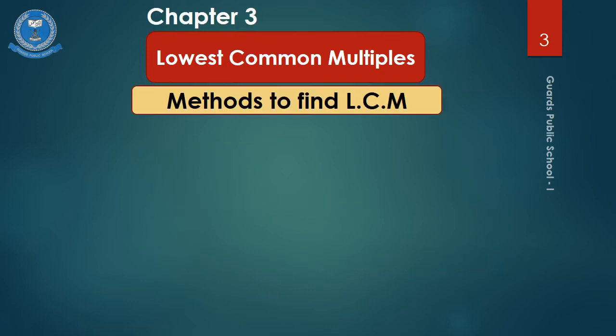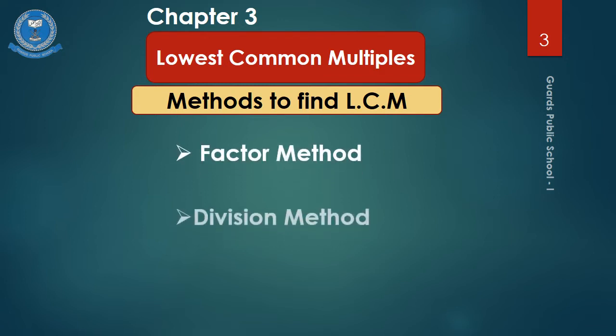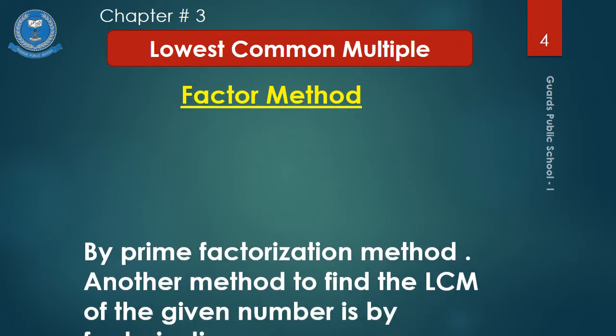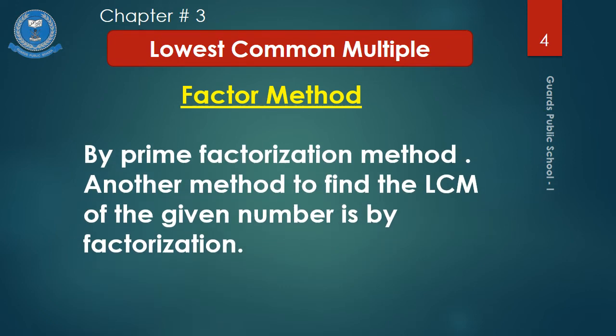Methods to find LCM. Students, we are going to learn two methods to find out LCM. The first method is the Factor Method and the second method is the Division Method. The Factor Method uses prime numbers, so it is called the Prime Factorization Method.